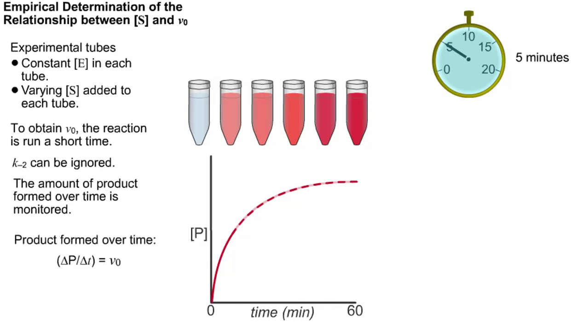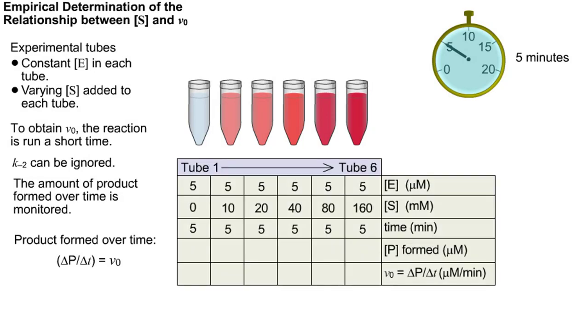The amount of product formed divided by the brief time of incubation is the slope of the early linear phase of the reaction. This rate of product formation is the initial velocity of the reaction.